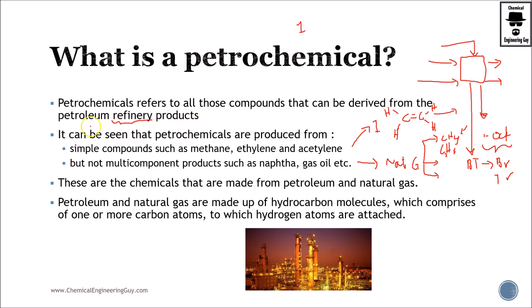So it's very important: when we talk about petrochemicals, it's a one-component material which typically comes from a petroleum refining product. Naphtha, as we'll see later, will be our raw material for several petrochemicals. These can also come from natural gas — if you take ethane and remove the hydrogen, you get ethylene, which is used for polyethylene, a very common polymer used in plastics. Both petroleum and natural gas are made from hydrocarbon molecules.